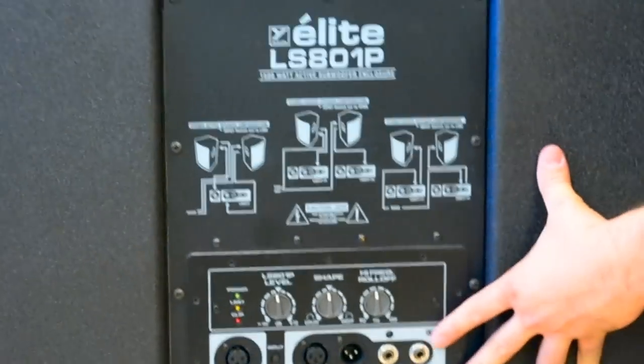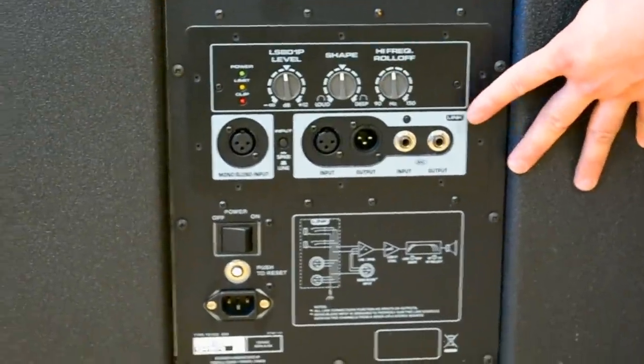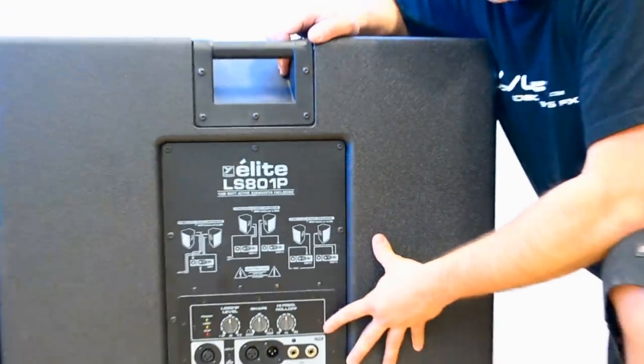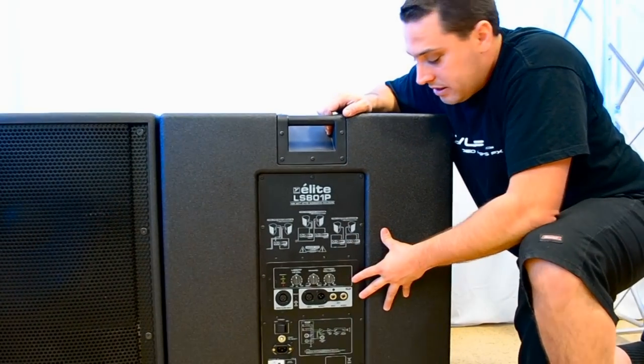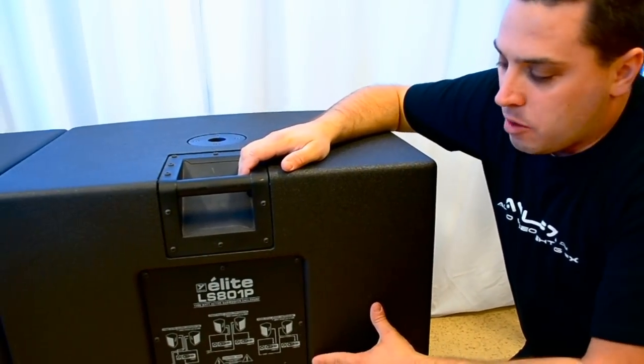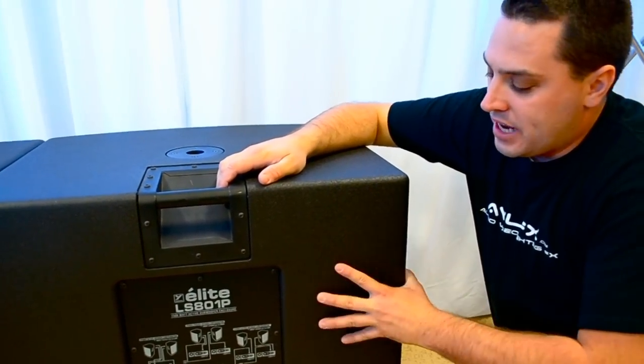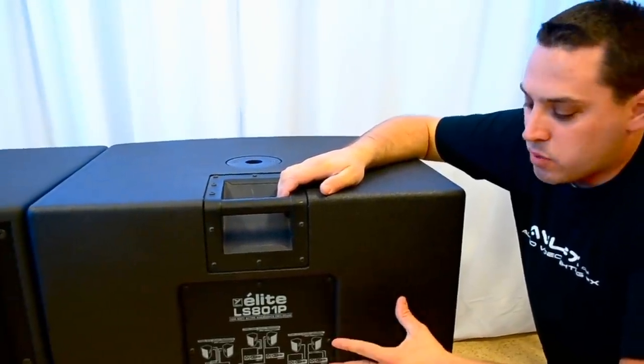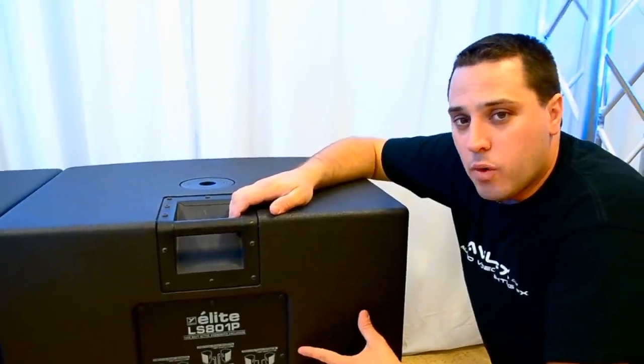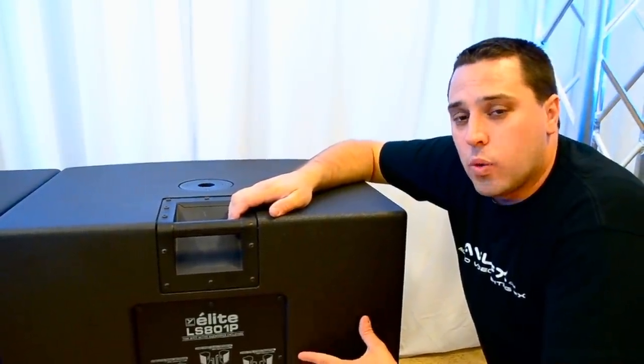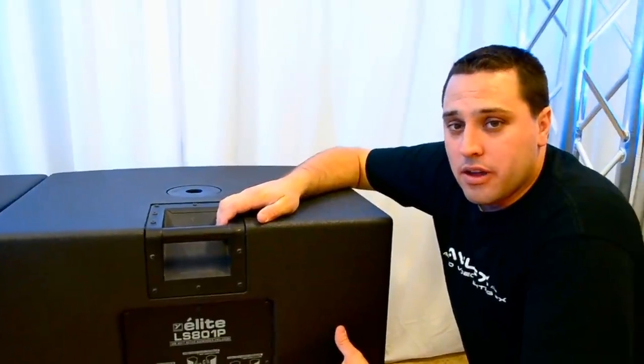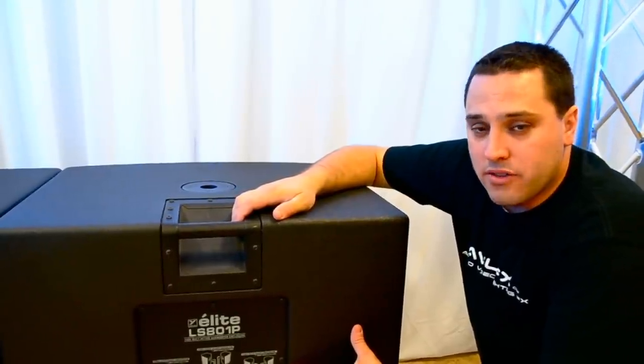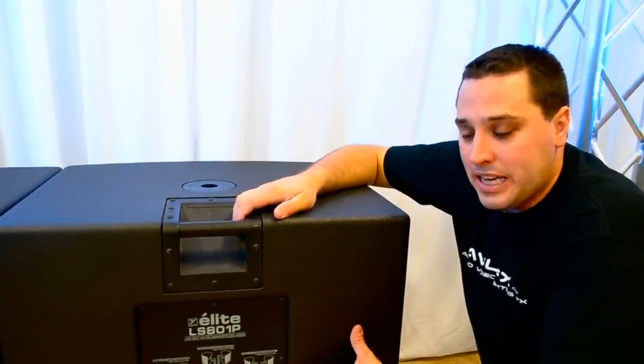You've also got quarter inch inputs if you want to power these with an external amplifier or signal processors. Mostly I'm going to talk about the physical nature of this subwoofer. We're looking at 1500 watts program power, 2500 peak, which is pretty incredible for a powered subwoofer. These guys are rocking all night. They have a sound pressure level of about 140 peak decibels.